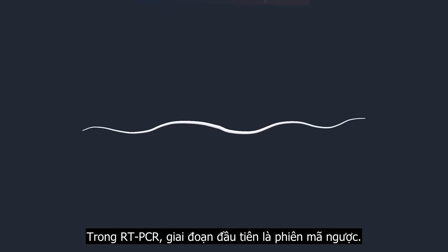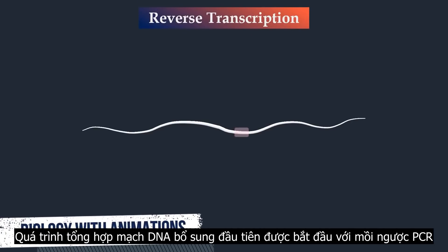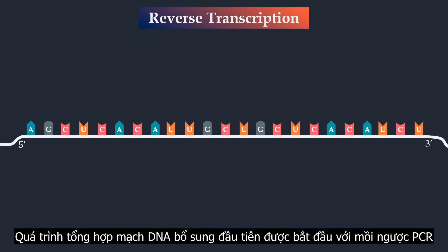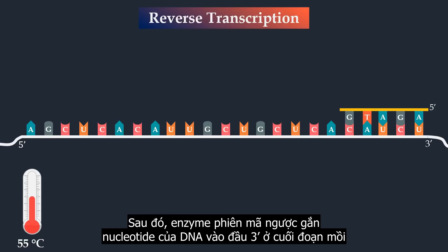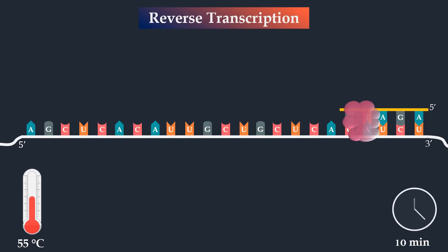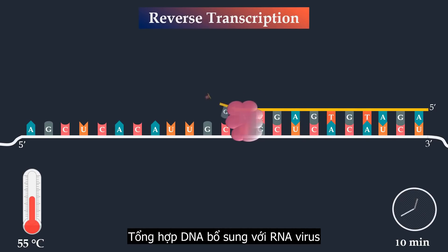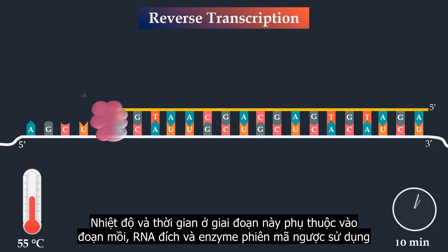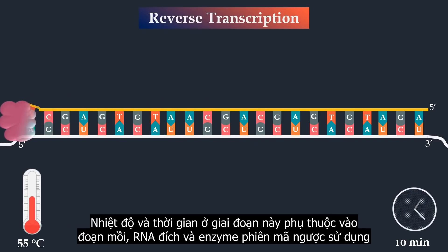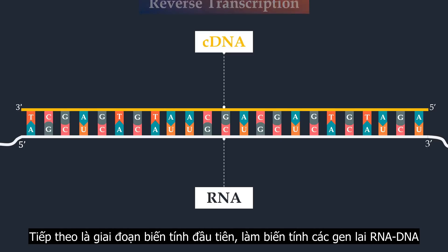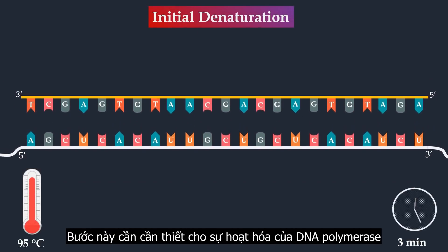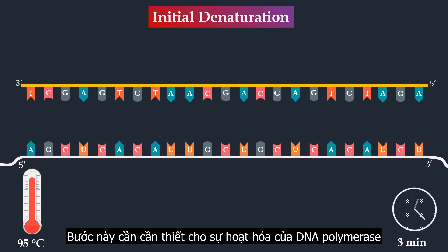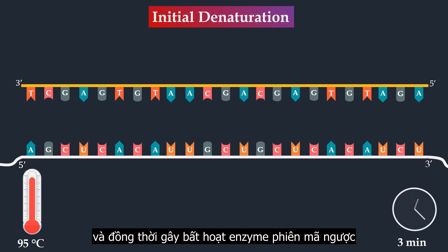The first step in RT-PCR is reverse transcription. The first-strand complementary DNA synthesis is primed with the PCR reverse primer, which hybridizes to a complementary part of the virus RNA genome. Reverse transcriptase then adds DNA nucleotides onto the 3' end of the primer, synthesizing DNA complementary to the viral RNA. The temperature and duration of this step depend on the primer, the target RNA, and the reverse transcriptase used. Next, an initial denaturation step is applied, causing denaturation of the RNA-DNA hybrids. This step is required for the activation of DNA polymerase and simultaneously the inactivation of reverse transcriptase.